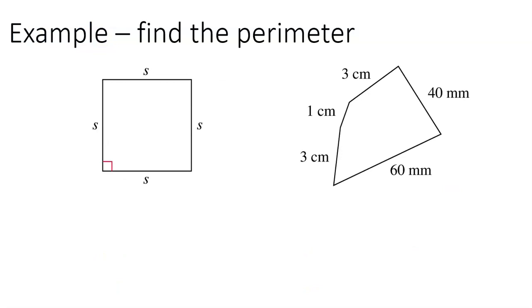This figure is a square — it has four congruent sides and one right angle. If that one angle is a right angle, then the other three are as well. So in this case, the perimeter is side plus side plus side plus side, which is four times a side. Same thing — just units.